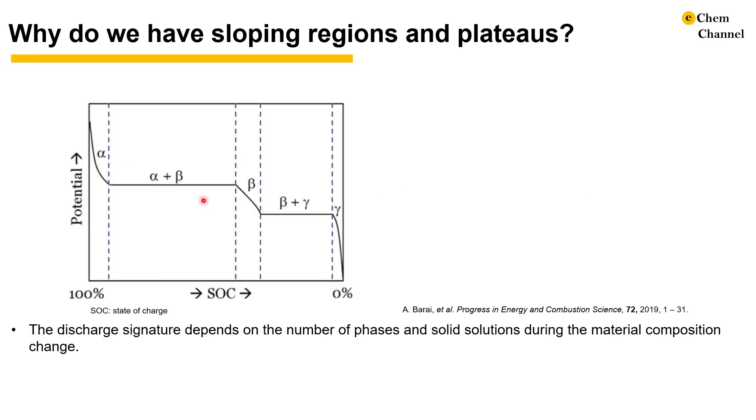Here we have a hypothetical case of a material M undergoing lithium insertion to form lithium M. The discharge curve goes through three sloping regions and two plateaus as the state of charge goes from 100% to 0%. On the materials level, SOC 100% represents the pristine material M and 0% stands for lithium M. The discharge signature depends on the number of phases and solid solutions during the material composition change and is rooted in the phase diagram.